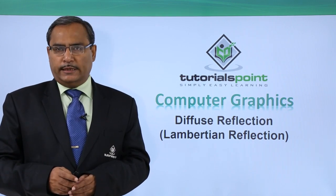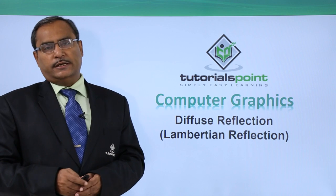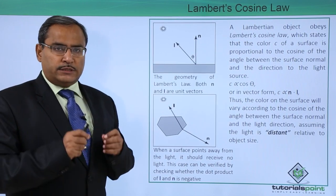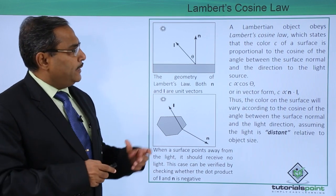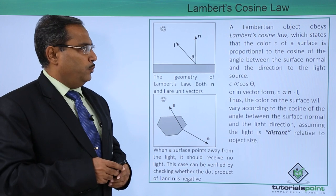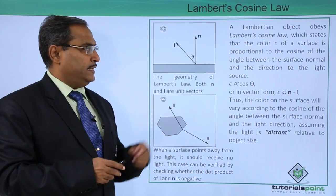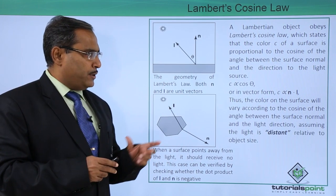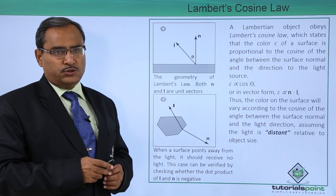In this video, we are discussing diffuse reflection and Lambertian reflection. First, we are going to discuss Lambert's cosine law. A Lambertian object obeys Lambert's cosine law, which states that the color c of a surface is proportional to the cosine of the angle between the surface normal and the direction of the light source.